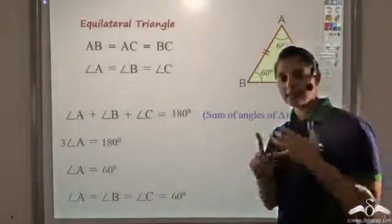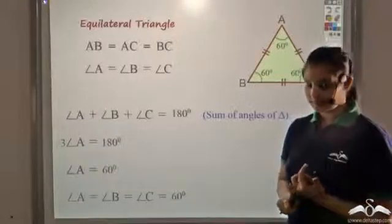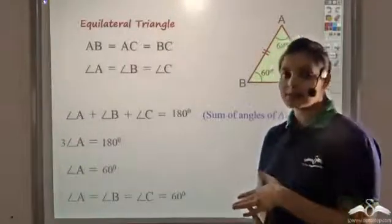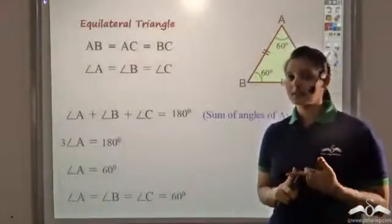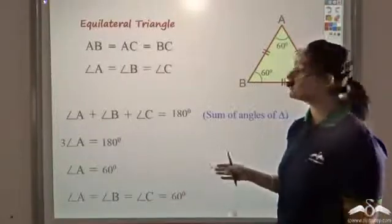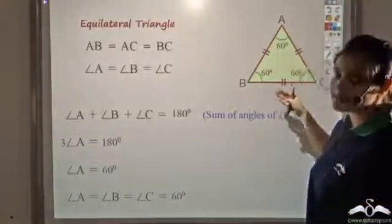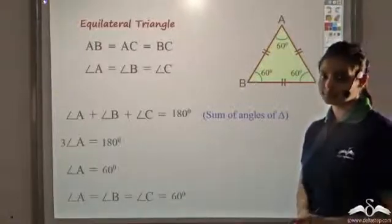So we have seen that equal sides contain equal angles, and equal angles contain equal sides. In an isosceles triangle we have two equal sides and two equal angles, and for an equilateral triangle we have three equal sides and three equal angles, each measuring 60 degrees.